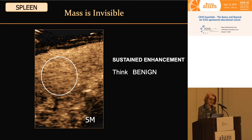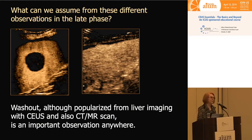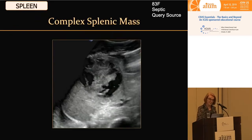What is it? I'm not sure — possibly a hemangioma, but I don't know. Doing labeled red blood cell scans of the spleen is not highly successful because you're looking for a blood pool tumor inside a blood pool organ. We don't know what it is, but we're not worried about it. What can we assume from these different late-phase observations? Washout — popularized from liver imaging with CEUS, CT, and MR — is an important observation anywhere. Washout on one lesion and sustained enhancement on the other.